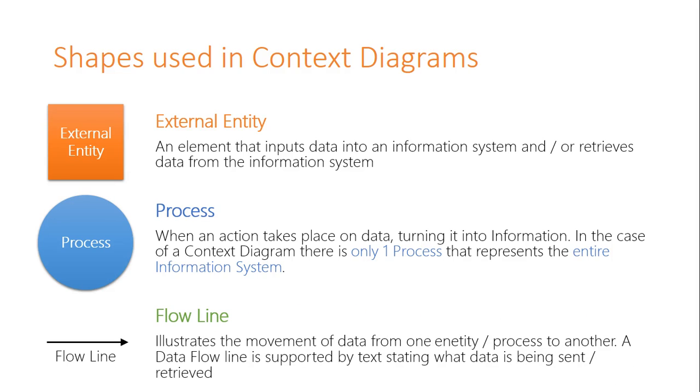Finally we have the flow lines. And the flow lines represent data going in and out of the information system itself in a context diagram. So we'll have lines going in showing what data is going into the information system, and then lines going back out to the external entities showing the information they're receiving from the information system.